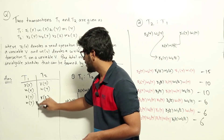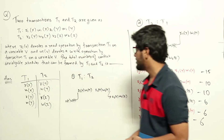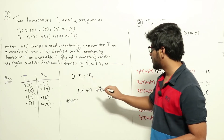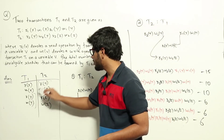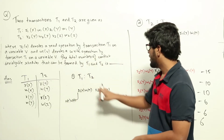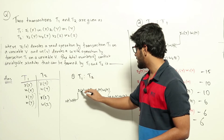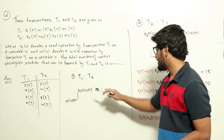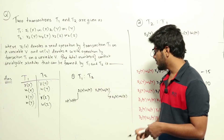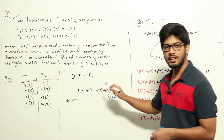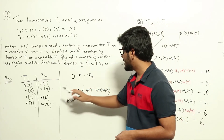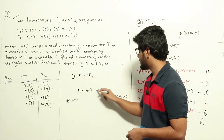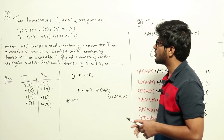For a schedule to be conflict serializable to T1→T2, the conflict operations — R1(Y), W1(Y), R2(Y), W2(Y) — must appear in this order: T1 first reads Y, then writes Y, and only after that does T2 read Y and write Y. These four operations must appear in this fixed order in any valid schedule.